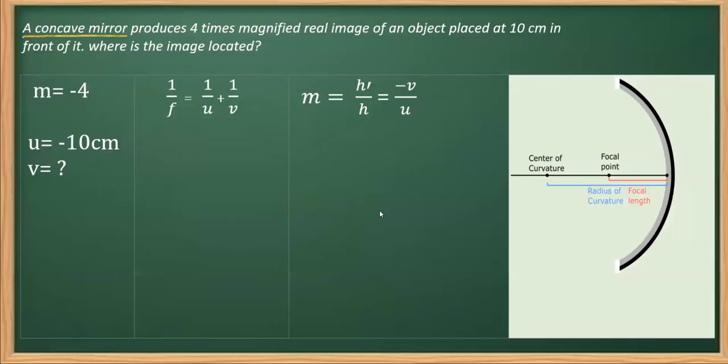The question says a concave mirror produces four times magnified real image of an object, so we know the magnification is four. But why have I taken negative? As you can see, the image formed here is real, and you know that in a real image it is always inverted, and that's why the magnification is taken as minus.